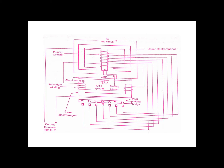This is the construction diagram of a non-directional induction type over current relay. This relay has an E-shaped magnet and a U-shaped magnet — it consists of two electromagnets. The aluminum disc is free to rotate between these two magnets.